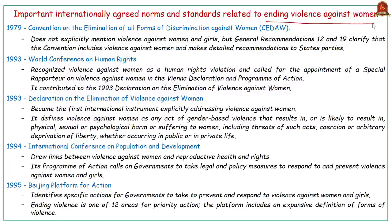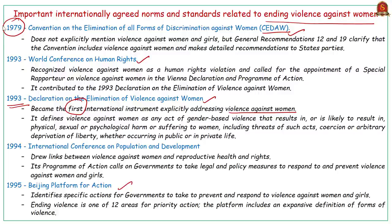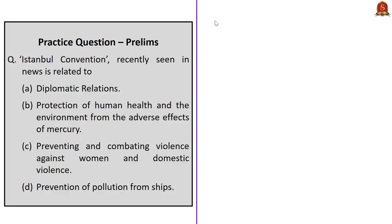From an examination perspective, you should also know about internationally agreed norms and standards relating to ending violence against women. These include the Convention on the Elimination of All Forms of Discrimination Against Women (CEDAW), the World Conference on Human Rights, the Declaration on the Elimination of Violence Against Women, and the Beijing Platform for Action. The 1993 Declaration on the Elimination of Violence Against Women is very important because it is the first international instrument to explicitly address violence against women, providing a framework for national and international action. However, CEDAW does not explicitly mention violence against women.